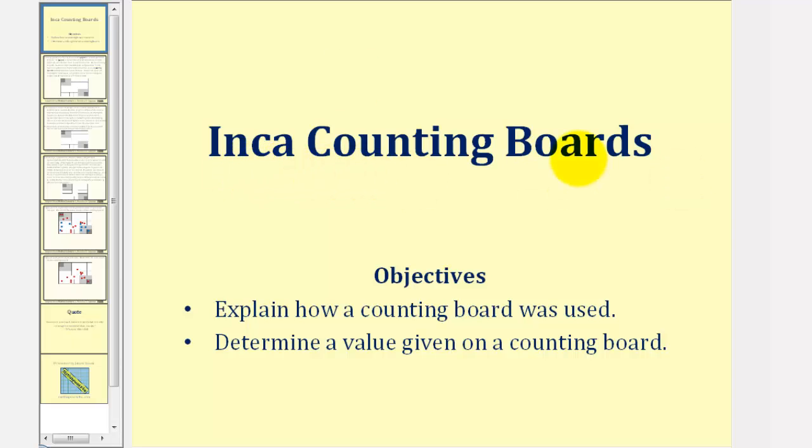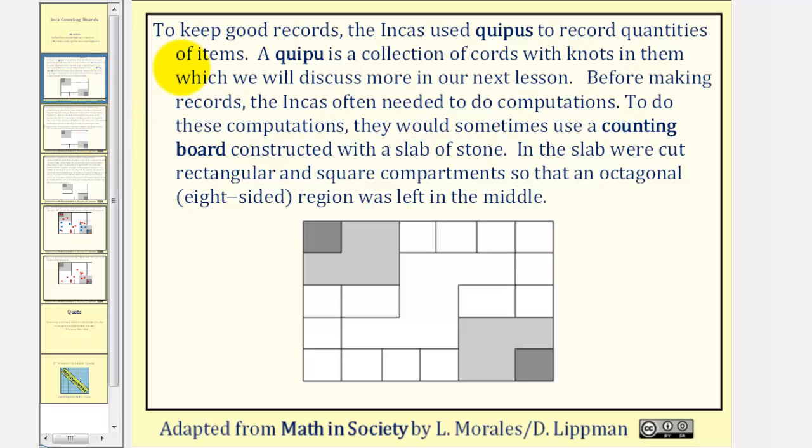Welcome to a lesson on Inca counting boards. To keep good records, the Incas used quipus to record quantities of items. A quipu is a collection of cords with knots in them, which we will discuss more in the next lesson. Before making records, the Incas often needed to do computations.